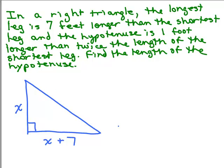Now what about the hypotenuse? The hypotenuse is the longest side, and it says it's one foot longer than twice the length of the shortest leg. The shortest leg is x, so twice that is 2x, and one foot longer gives us 2x plus 1. So that's the length of the hypotenuse.